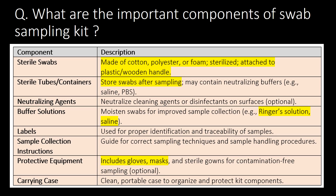What are the important components of a swab sampling kit? Sterile swab, sterile tubes or containers, neutralizing agents, buffer solutions, labels, sample collection instructions, protective equipment, and carrying case are the important components of a swab sampling kit.